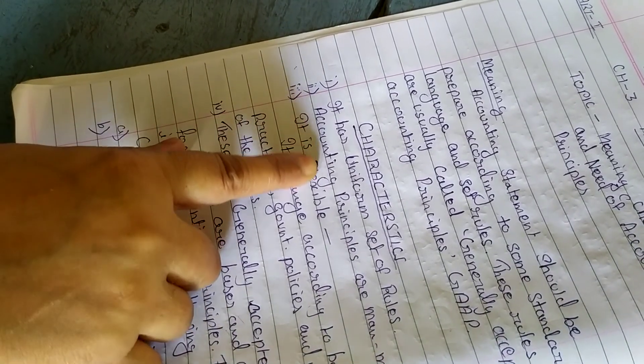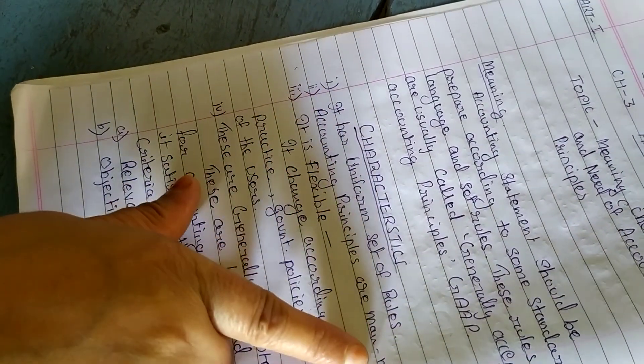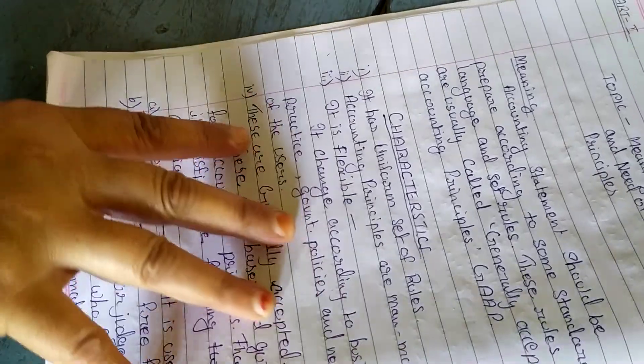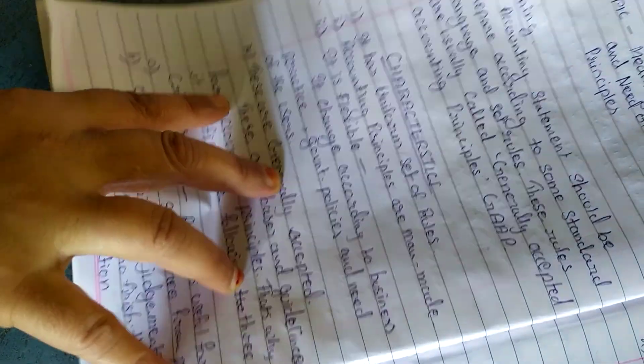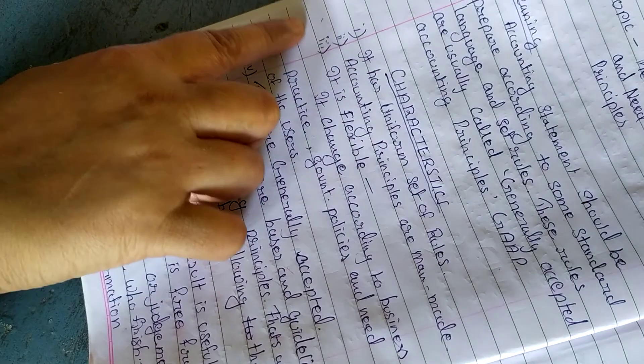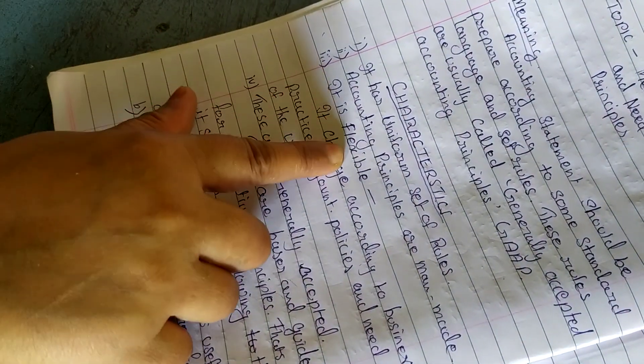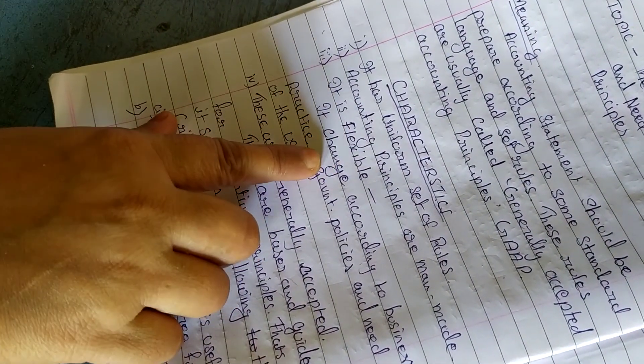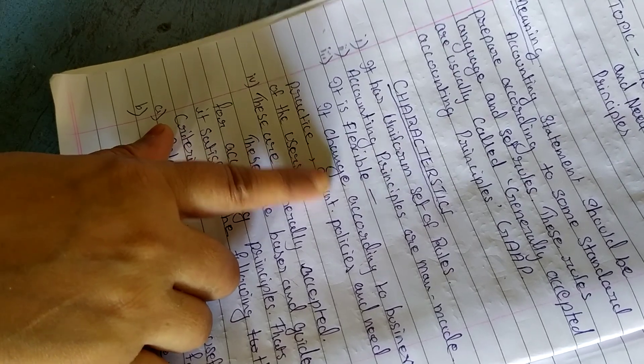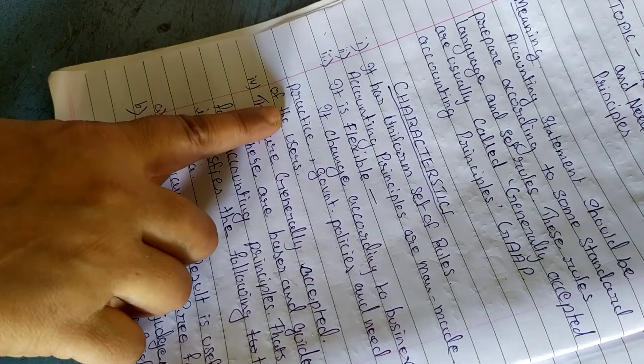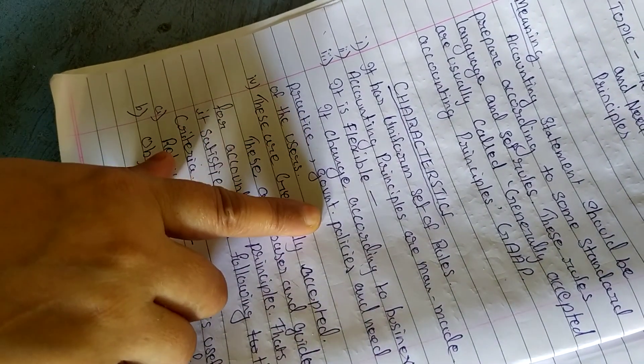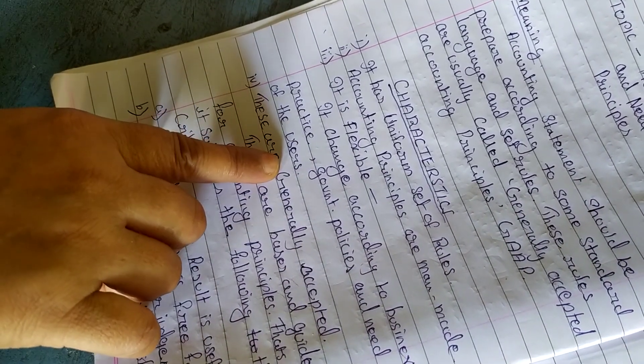Second, accounting principles are man-made. These principles are prepared by man. And third, it is flexible by nature because it can be changed according to the business practice and government policies and the need of users.